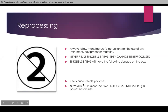You have to keep burrs in sterile pouches and new sterilizers. For every office that obtains a new sterilizer, you have to have three consecutive biological indicators that pass before use. That means you cannot put in your first cycle before creating three biological indicators that are negative — showing no spores growing.